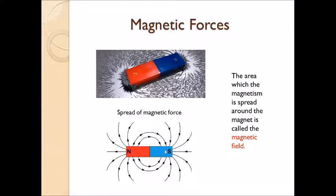Yes, this is the pattern. The iron filings fallen a little bit away from the magnet are seen in an irregular manner. So we can say magnetic forces are spread around a limited area of a magnet. The area which the magnetism spreads around the magnet is called the magnetic field.